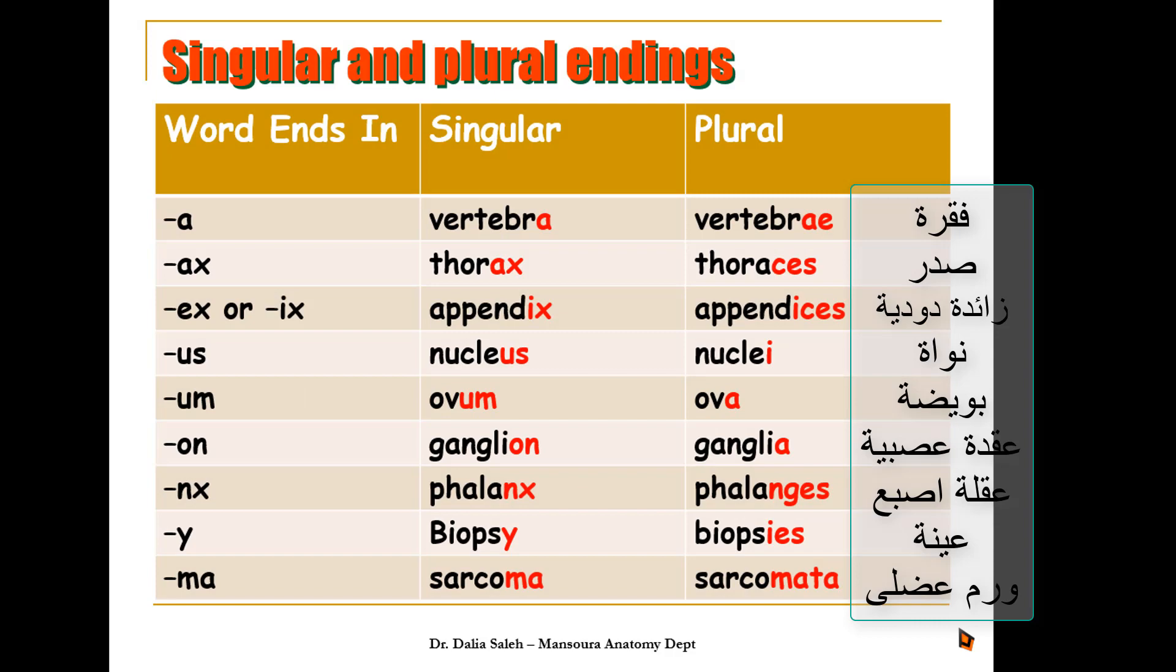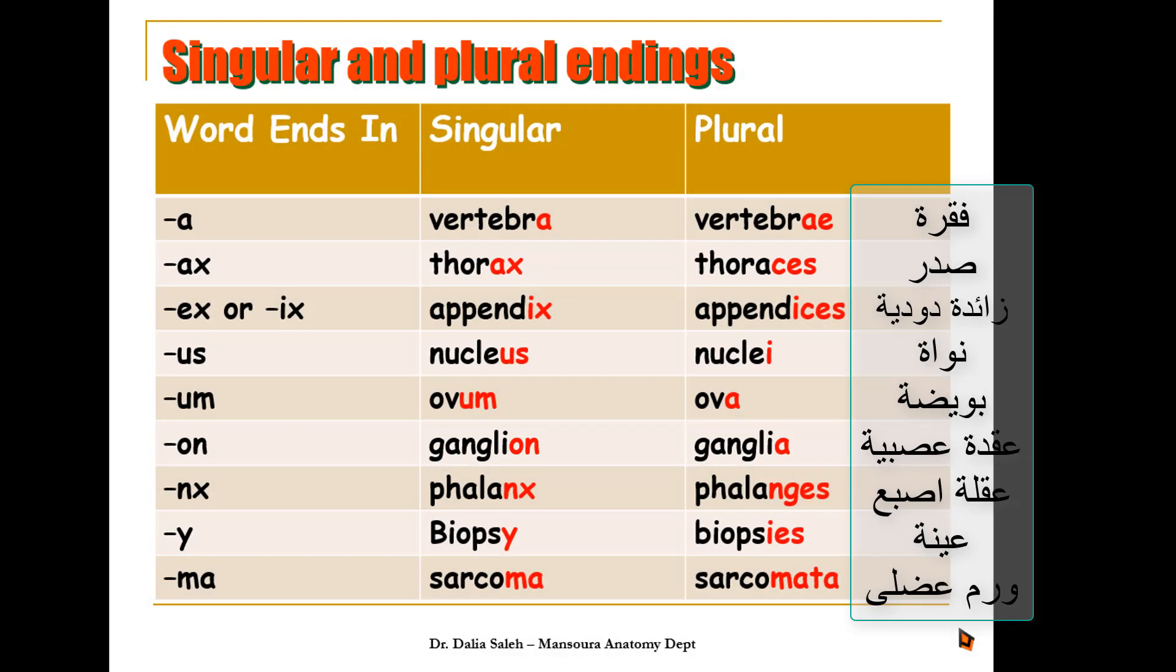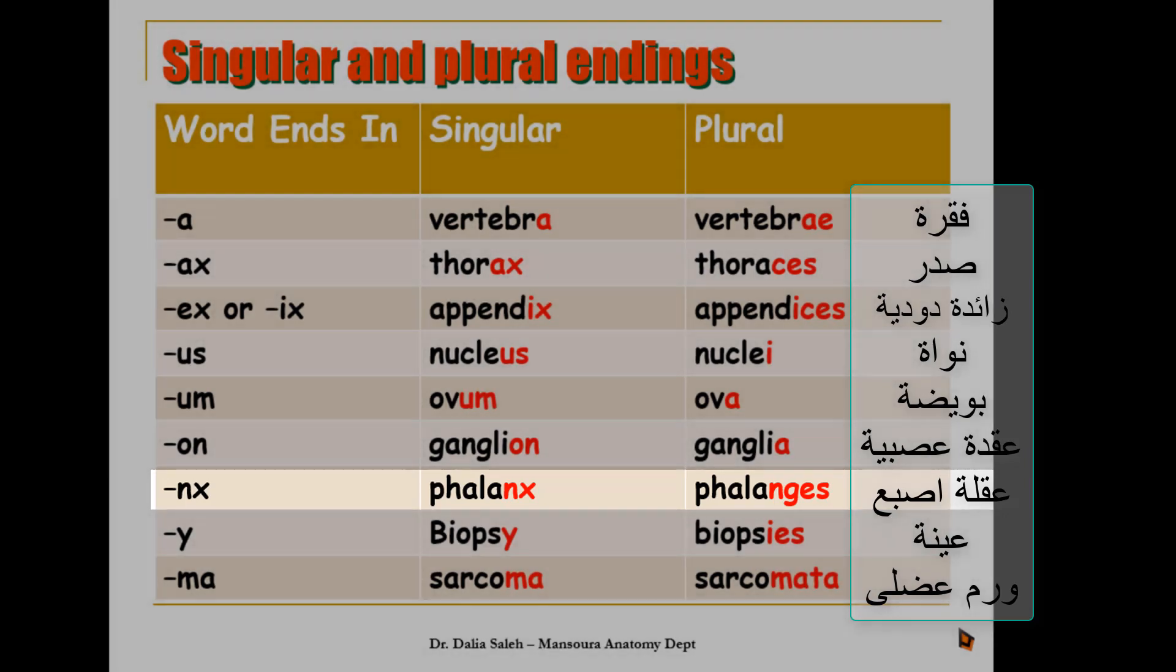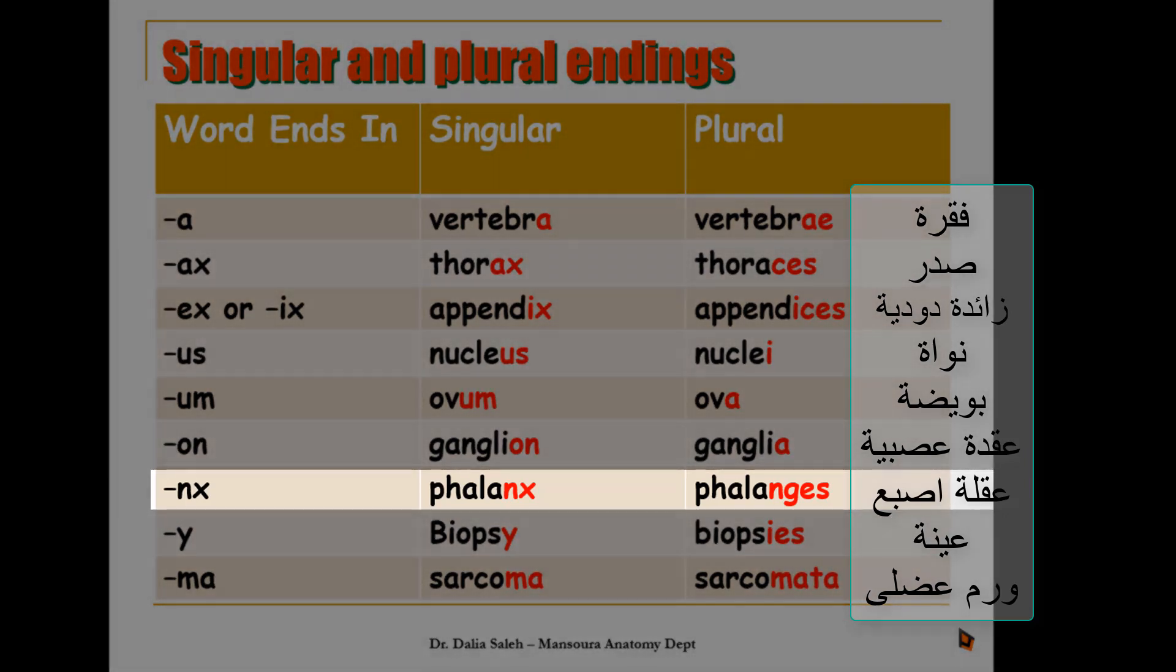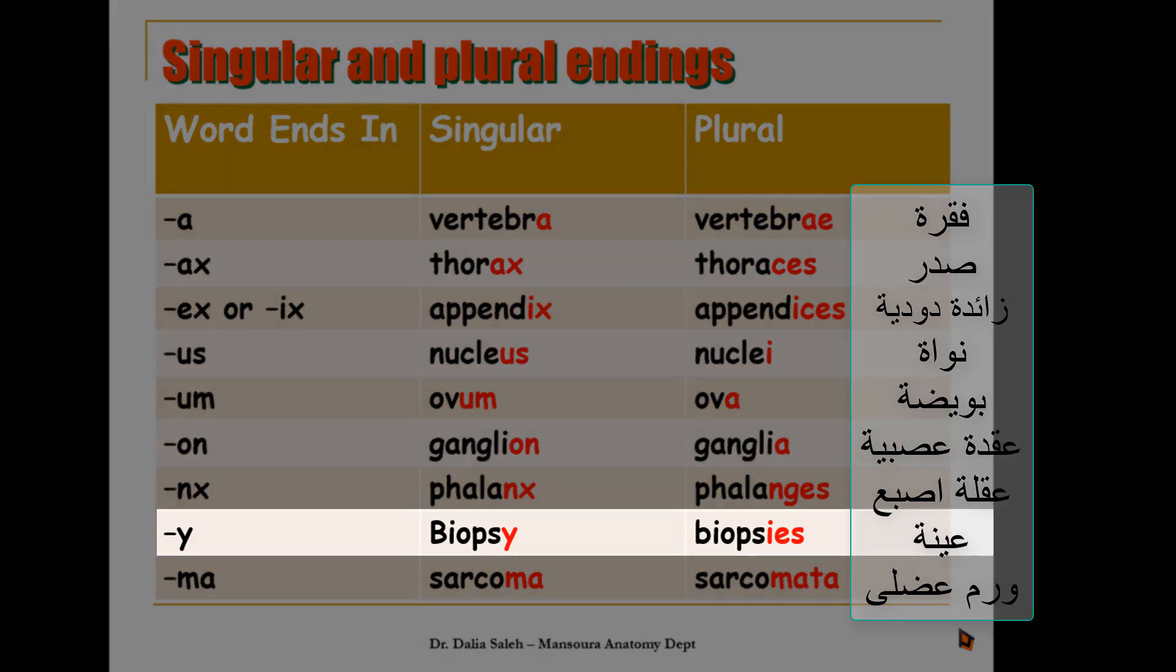Words that end in ON change into A. So ganglion changes into ganglia. Words that end in NX change into NGES. So phalanx becomes phalanges. Words that end in Y, the Y is changed into IES, as in biopsy becomes biopsies.